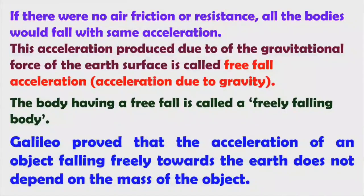Galileo proved that the acceleration of an object falling freely towards the earth does not depend on the mass of the object — small g does not depend on the mass of the object. This was proved by Galileo Galilei, who is also called the father of modern science.